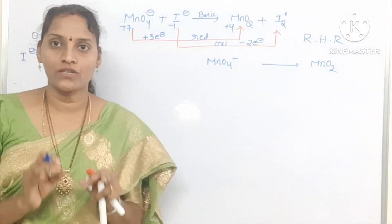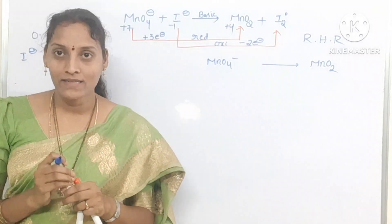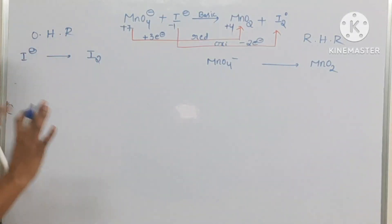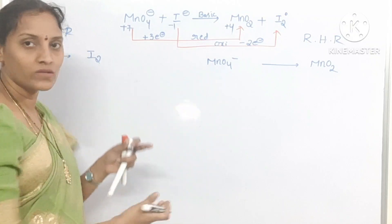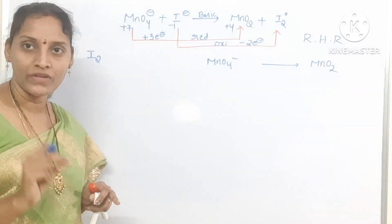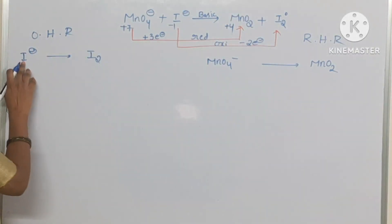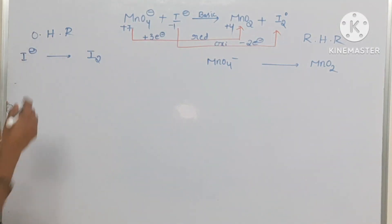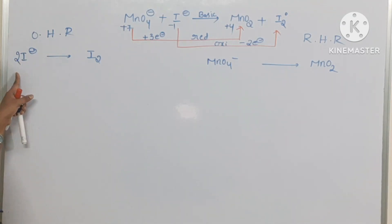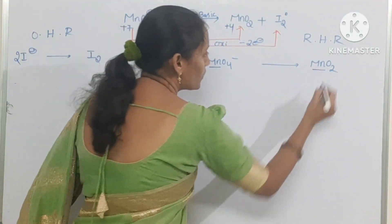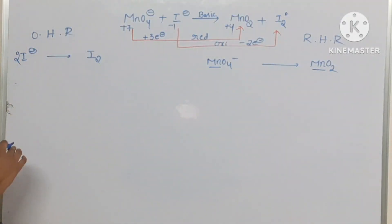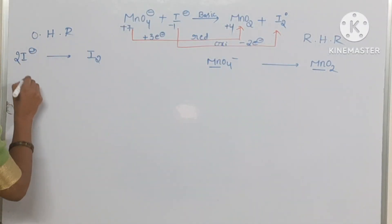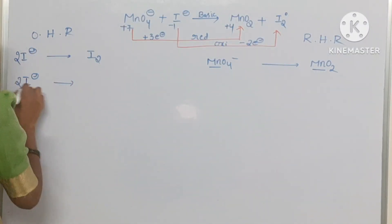After separation, you should balance atoms other than oxygen and hydrogen. Here we have iodine and manganese. For iodine: one I⁻ on the left and I2 on the right — so multiply the left side by 2, giving 2I⁻ to I2. For manganese: one Mn on each side, so it is already balanced. Next, balance the oxygen atoms.